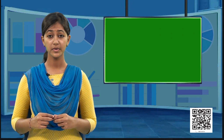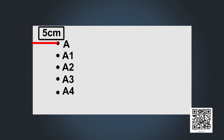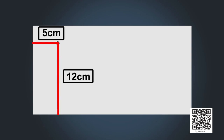To solve this problem, we will measure the distance of the point from the left edge. The point is 5 centimeters away from the left edge, but that still gives many possible points. If we also know it is 12 centimeters away from the bottom edge, then with these two pieces of information, we can exactly locate point A.